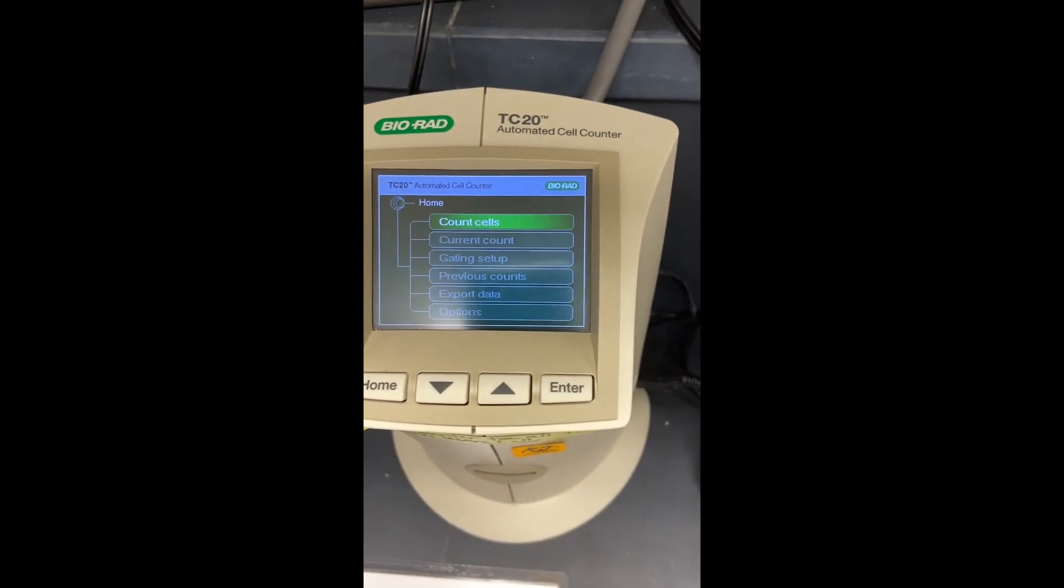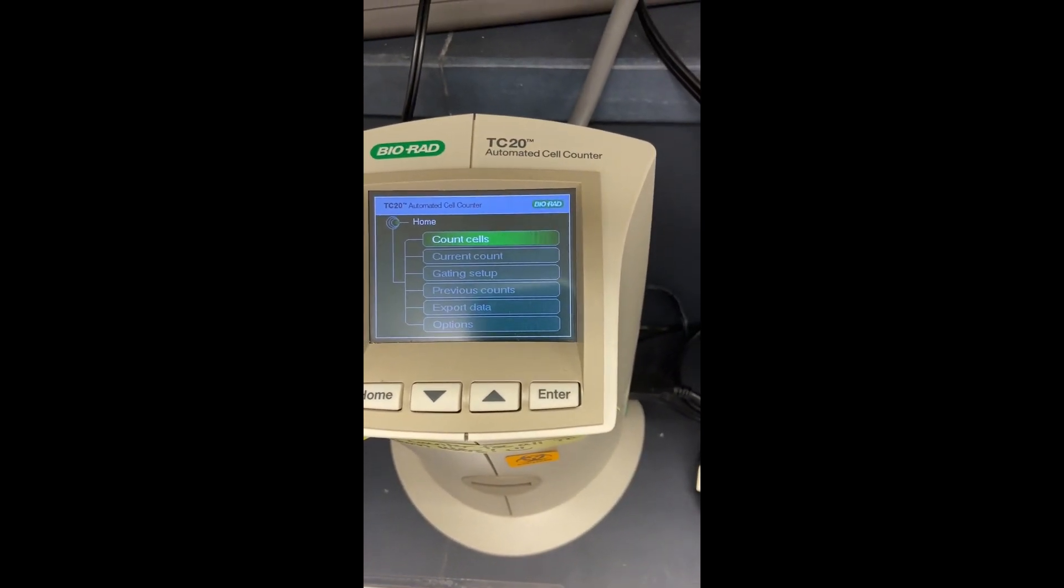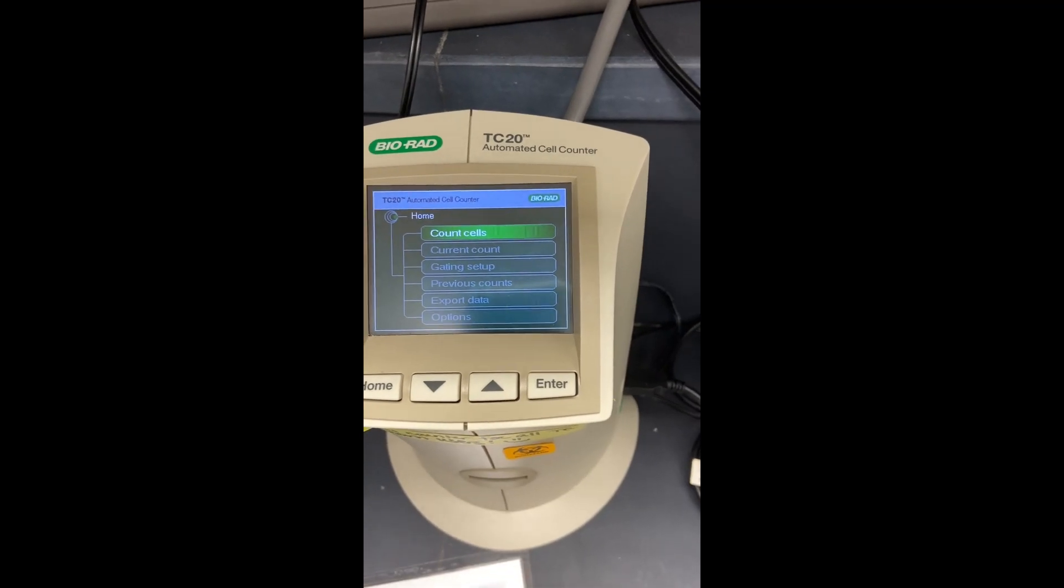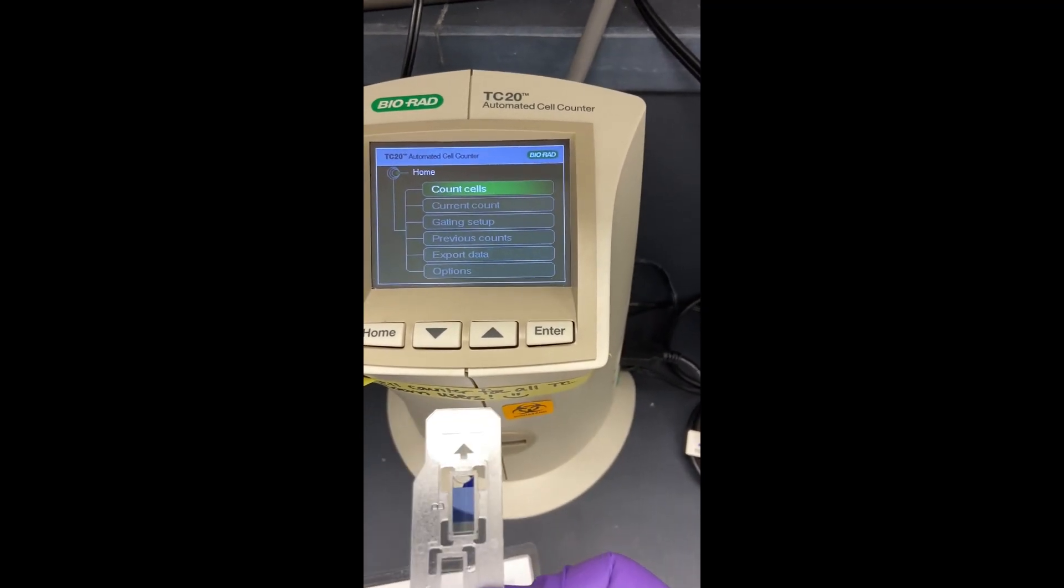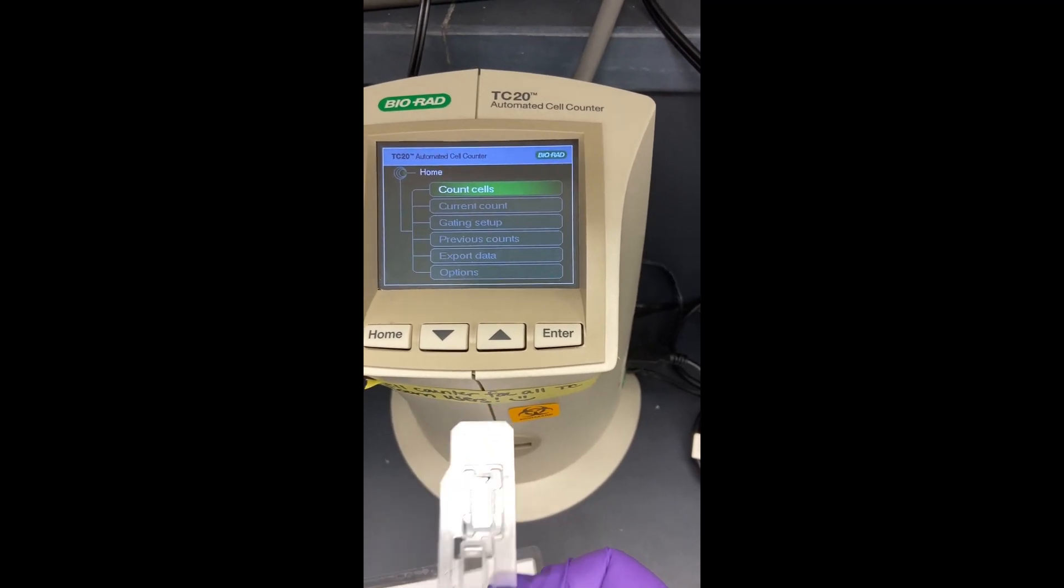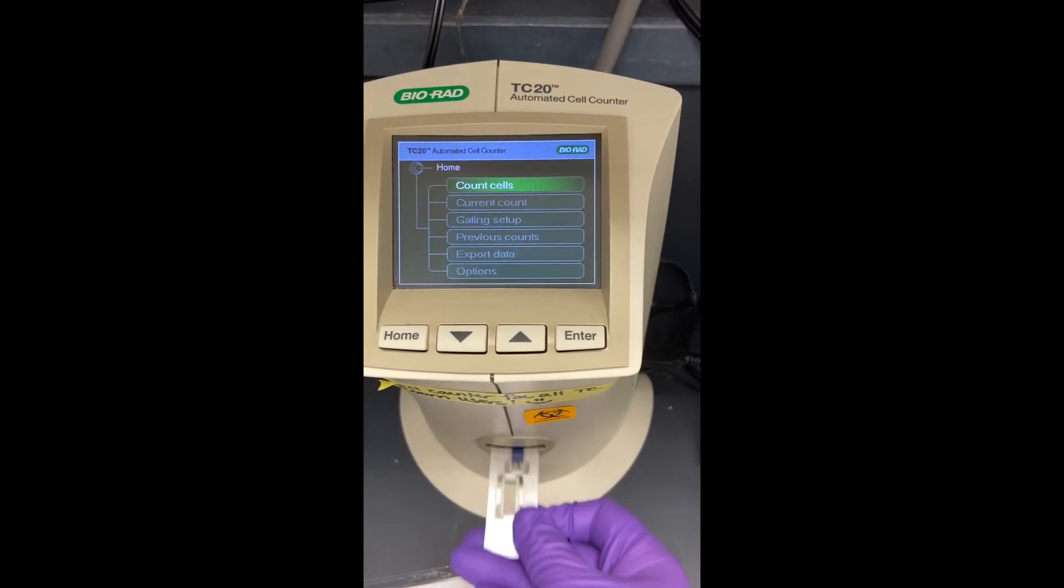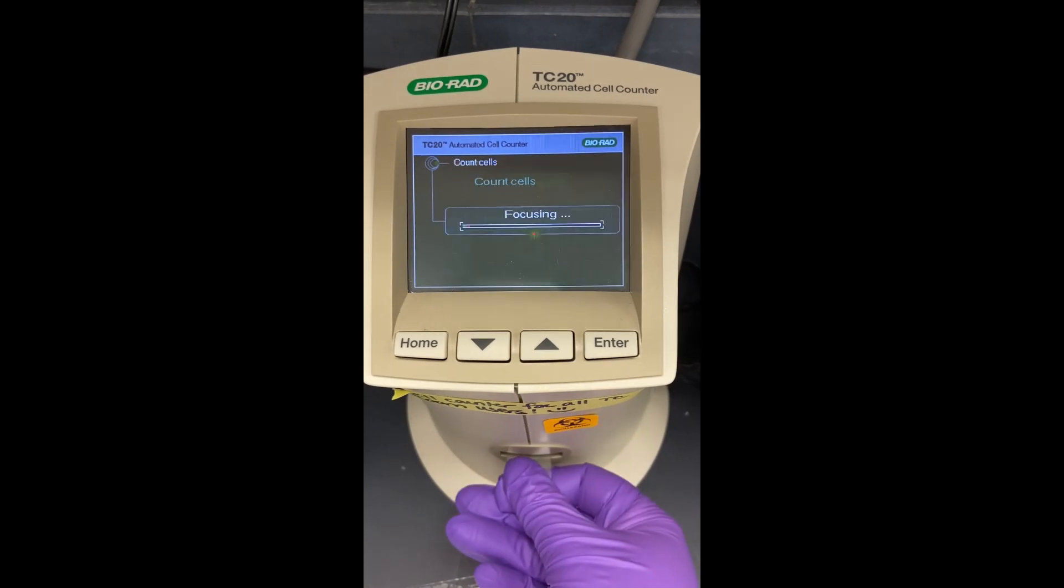And so when it comes up, it comes up with this menu where you can count cells and do all these different things. But honestly, all you really do is take the slide. So again, this is side B with the trypan blue and put it in there.